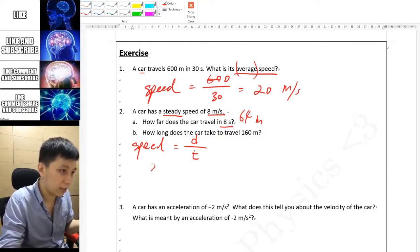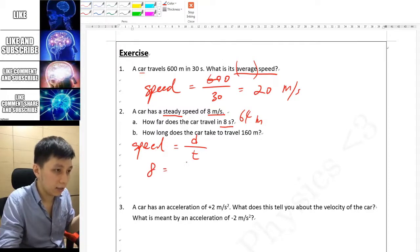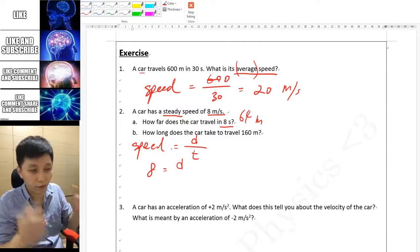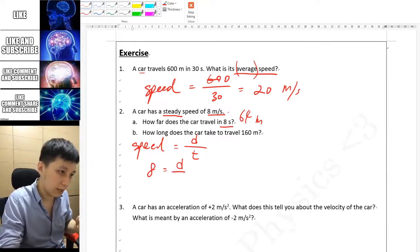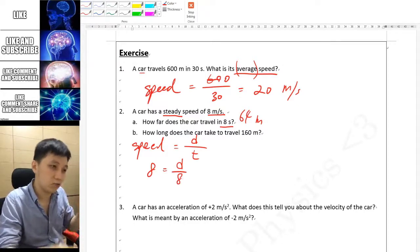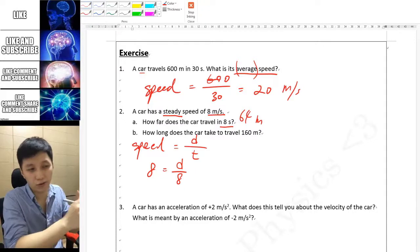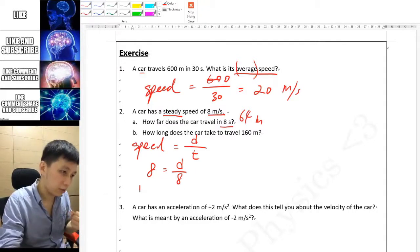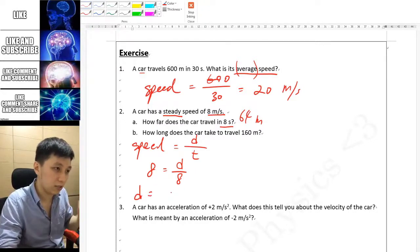What you can do simply is substitute what you know. Speed is 8, distance is what you want to find so put it as d, and time is also 8 seconds. This is the way that you substitute into the equation first, and then finally you can find d, which is distance, equals 64 meters.